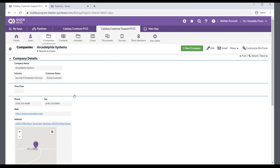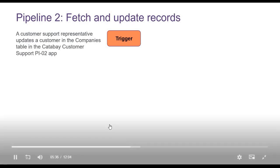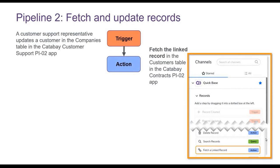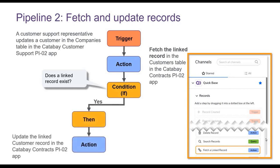You need to set up a second pipeline to handle updates. The second pipeline connects the linked record in the Customer Support app back to the record in the Contracts app for updates. This pipeline is triggered when a Customer Support representative updates a customer record in the Companies table in the Katabay Customer Support PI02 app. Next, the pipeline uses the Fetch a Linked Record action to get the linked record in the Customers table in the Katabay Contracts PI02 app. You now need a condition to test if a linked record was found — this prevents an error if you try to update a record when the pipeline doesn't know which record to update. If a linked record does exist, the pipeline updates it; if not, nothing happens.